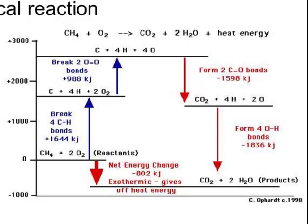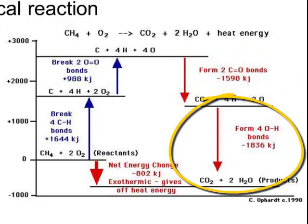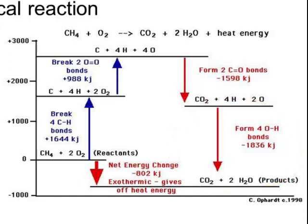Remember that when I have two atoms, they are unstable and have a lot of potential energy. As those atoms get closer together, they become more and more stable and release energy when they form chemical bonds. This is represented by the red lines on the right side of this diagram, where I'm forming two carbon-oxygen bonds in the carbon dioxide and four oxygen-hydrogen bonds in the water.